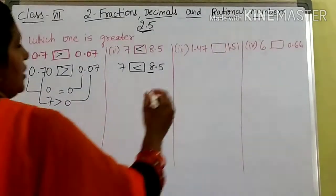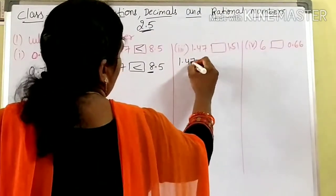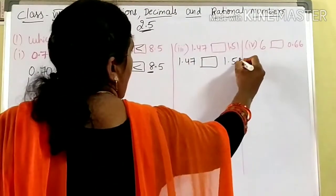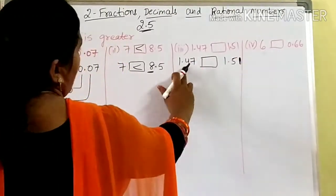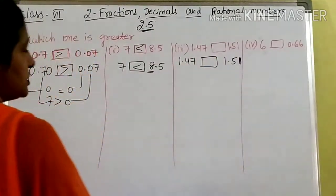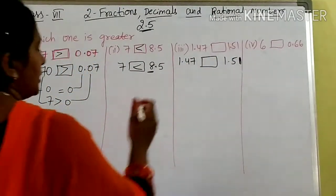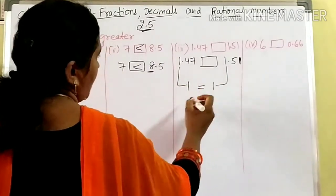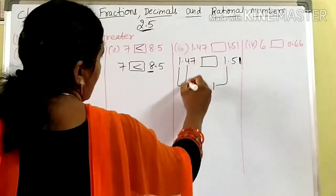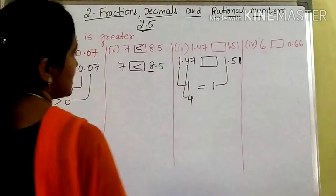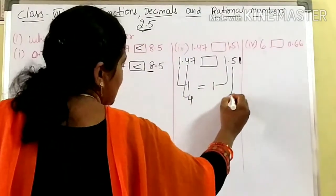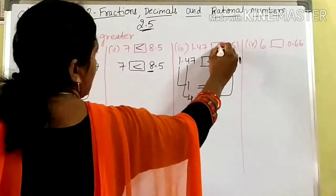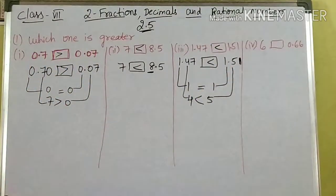Coming to the third one: 1.47 and 1.51. They are in like decimal fractions — decimal after two numbers both. First, we compare the whole part: 1 and 1, they are equal. Coming to next, what is the 10th place? 4. Here, what is the 10th place? 5. Which is greater? 5 is greater. So 1.51 is greater.